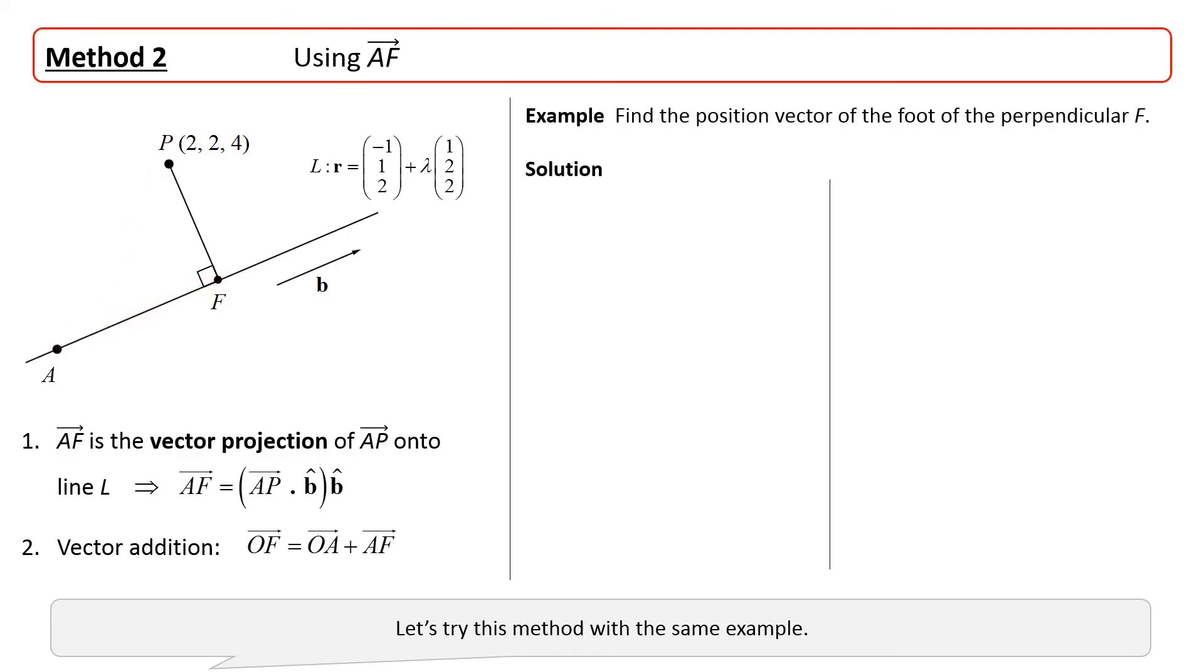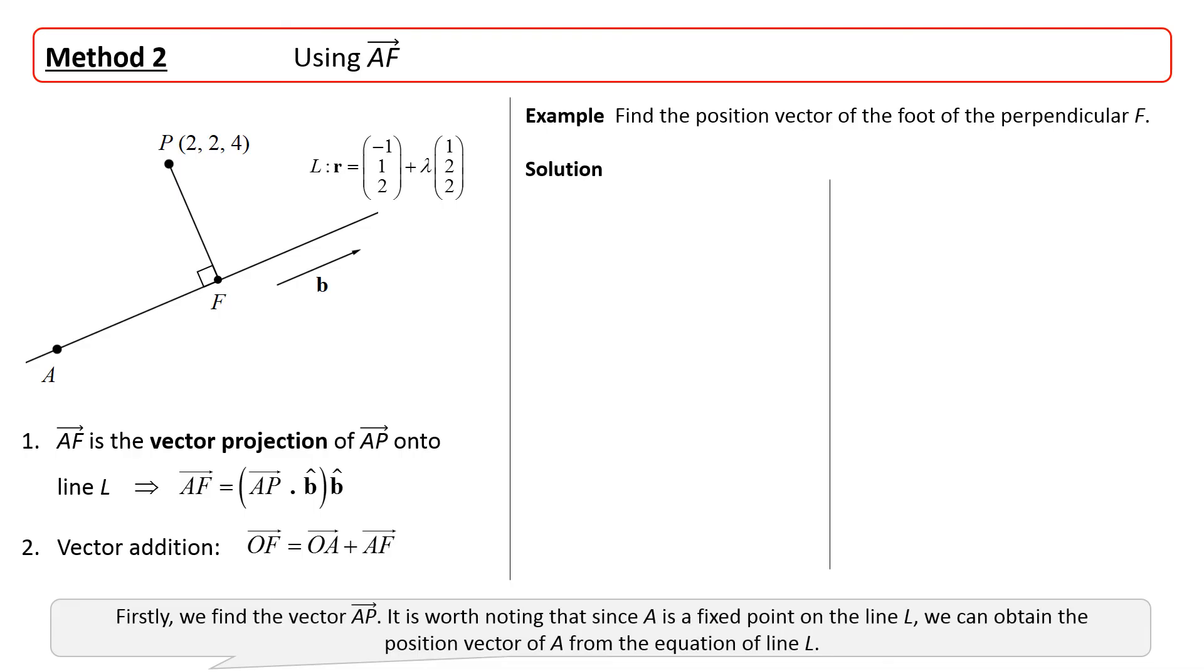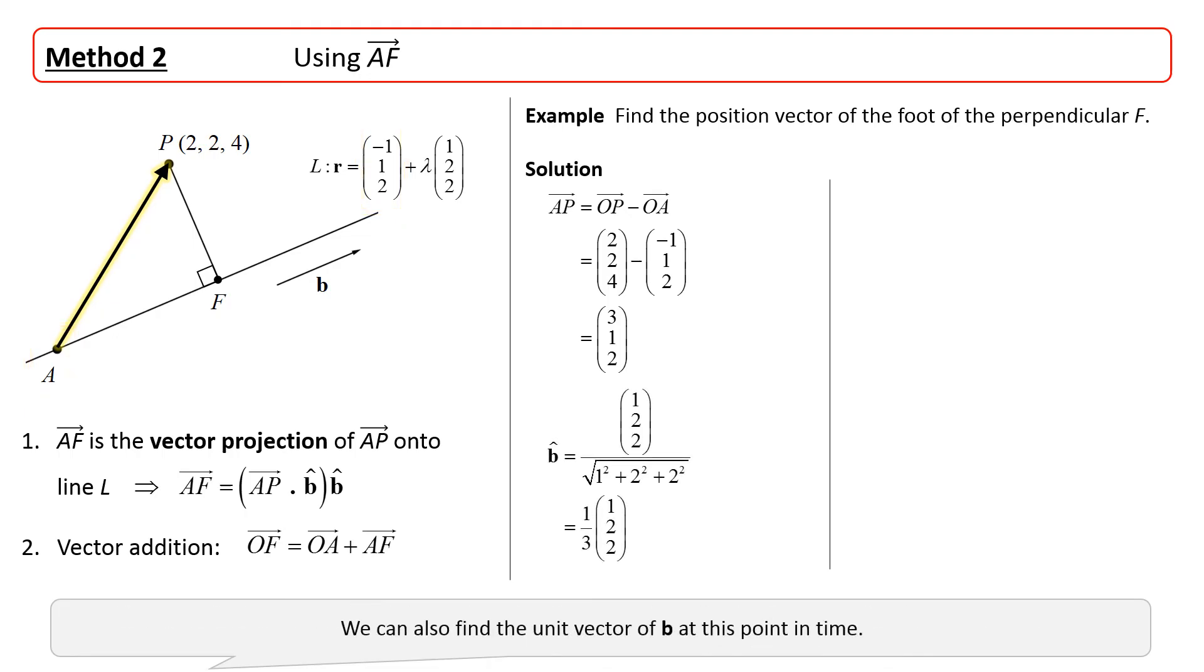Let's try this method with the same example. Firstly, we find the vector AP. It is worth noting that since A is a fixed point on the line L, we can obtain the position vector of A from the equation of line L. We can also find the unit vector of B at this point in time.